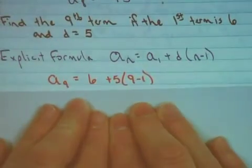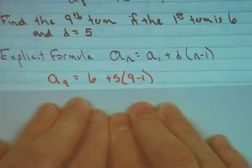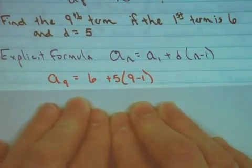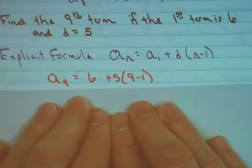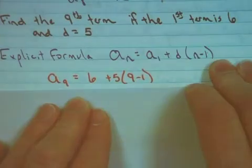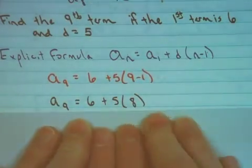Plugging all of that in, I now have that a sub 9 is equal to 6 plus 5 times the quantity 9 minus 1. By order of operations, we should take care of the parentheses first. 9 minus 1 is 8.